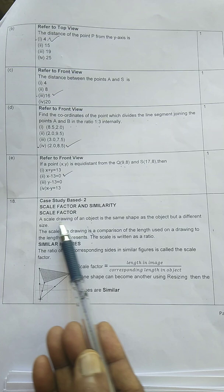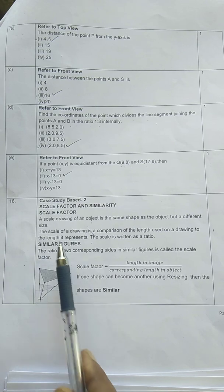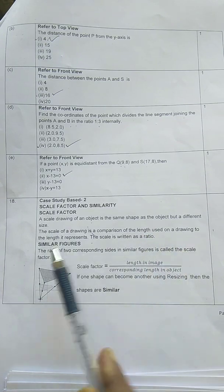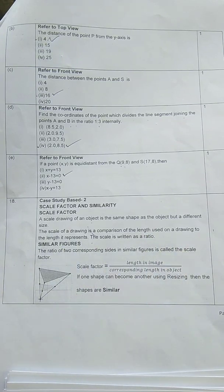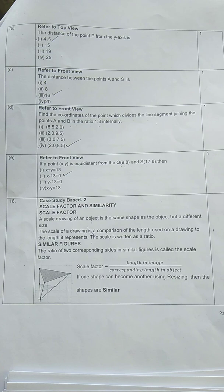A scale drawing maintains the same shape but a different size. For example, if we make a picture of the Taj Mahal, we make it a different size but the same shape — that is a scale drawing. The scale of a drawing is a comparison of the length used on a drawing to the length it represents, and the scale is written as a ratio.